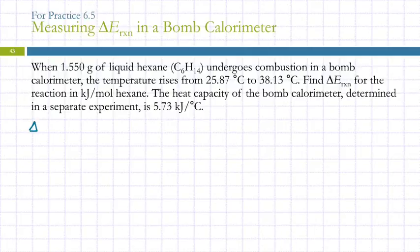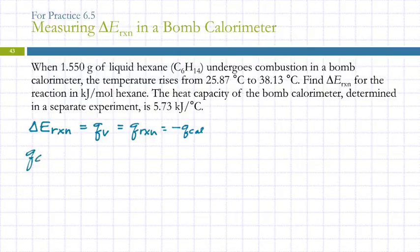So the big idea here is that delta E reaction equals QV, the heat at constant volume. It's a bomb calorimeter. The volume is constant. So that is equal to the heat from the reaction. And that is equal to negative Q for the calorimeter. Well, what is Q for the calorimeter? Usually we do Q equals MC delta T. But for the bomb calorimeter, we combine M and C. And so it's not C sub S. It's just C for the calorimeter times the change in temperature.